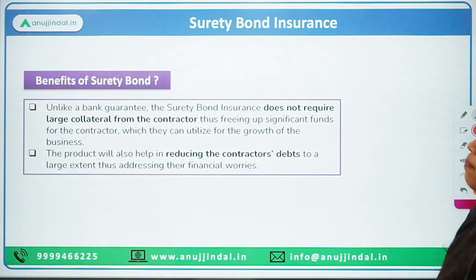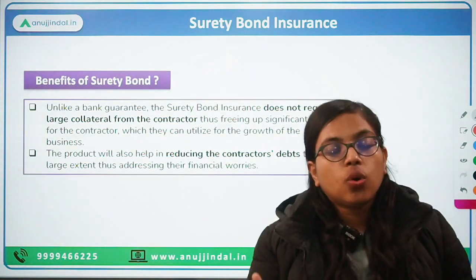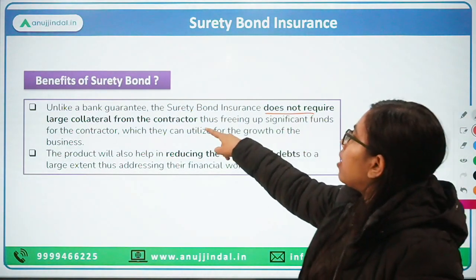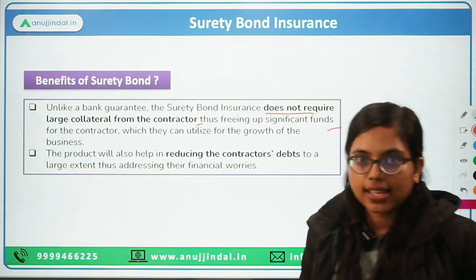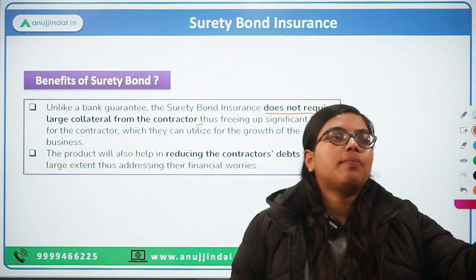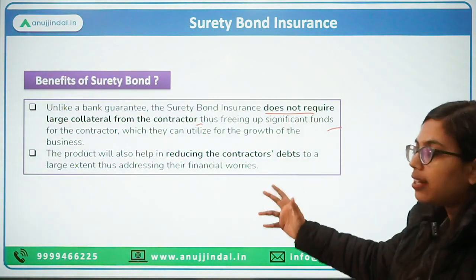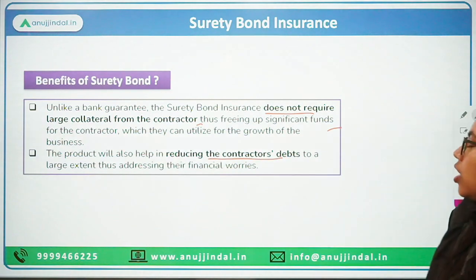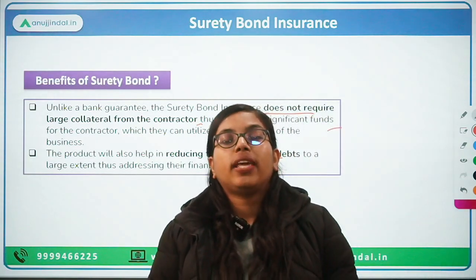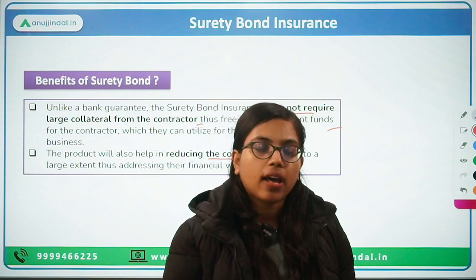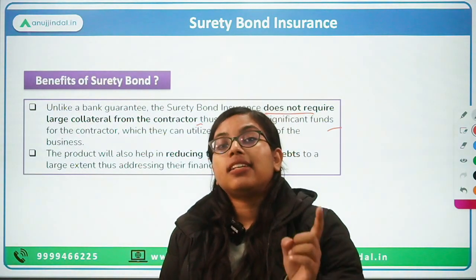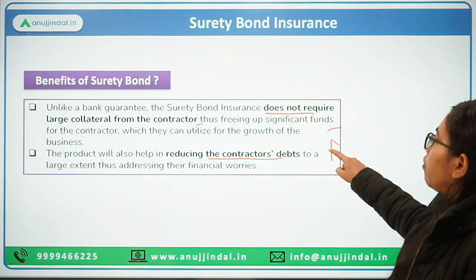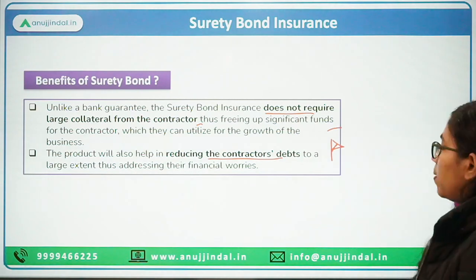What are the benefits of surety bonds? First, there is no need for large collateral from the contractor when the insurance company issues surety bonds, thus freeing up significant funds for the contractor as well. Banks will also have more capital to loan to other sectors that give better returns. Second, the product will help in reducing the contractor's debt to a large extent, addressing their financial worries. If the obligation is not met or quality is not as per the government's terms, it is the insurance company — the surety — who provides the guarantee, saving the contractor from debts owed to the government.